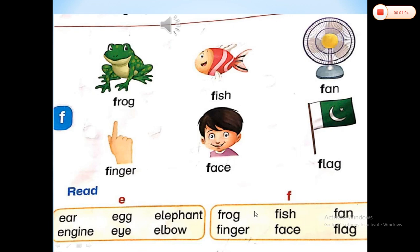Now let's repeat the words that start with letter E. First we will revise the words that start with letter E: 'eh' — ear, 'eh' — egg, 'eh' — elephant, 'eh' — engine, 'eh' — eye, 'eh' — elbow.